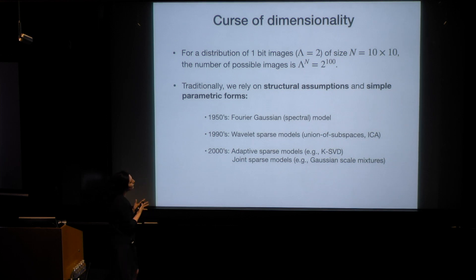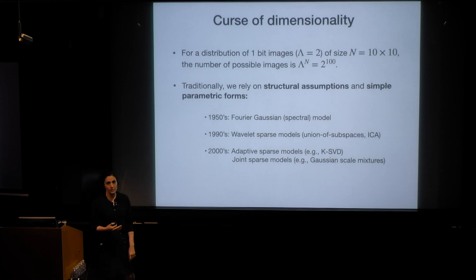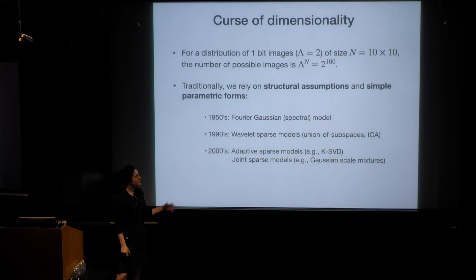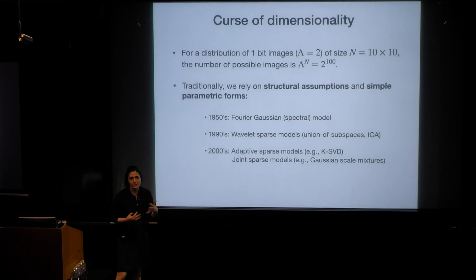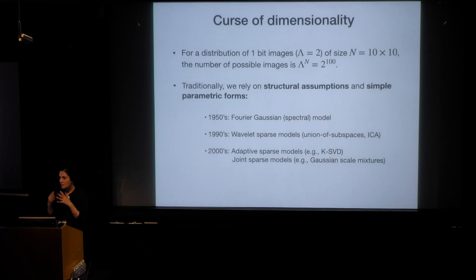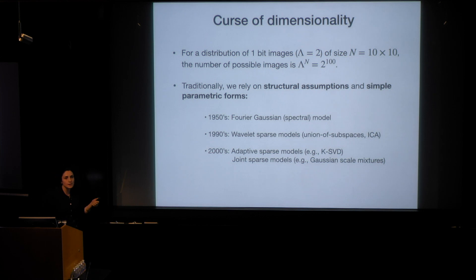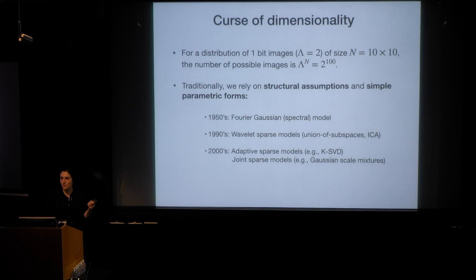Traditionally, people relied on structural assumptions and parametric forms of these distributions in image and signal processing literature. Many decades ago, we assumed images are Gaussian in the Fourier domain, then wavelet sparse models were developed, followed by adaptive sparse and joint sparse models. Assuming more complex parametric forms resulted in a gradual, steady increase in performance, but the performance was not that great because these forms are too simplistic to capture the entire complexity of images.